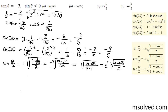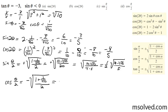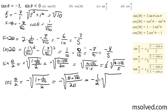For the half angle of the cosine, it will be negative in this case. We have the square root of 1 plus 1 over the square root of 10, all over 2. Similarly, this becomes negative one-half times the square root of 10 plus root 10 over 5.